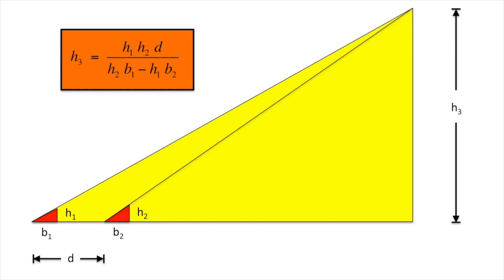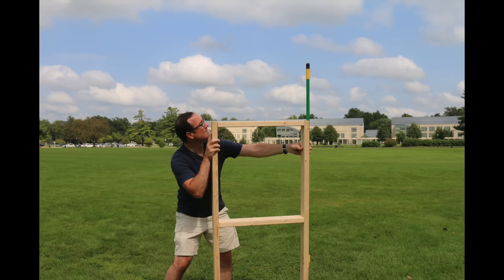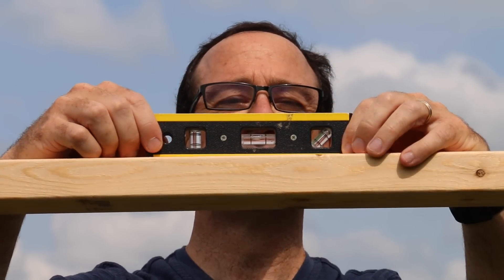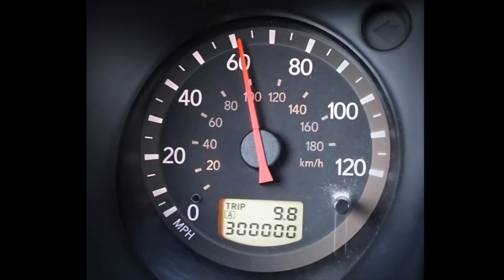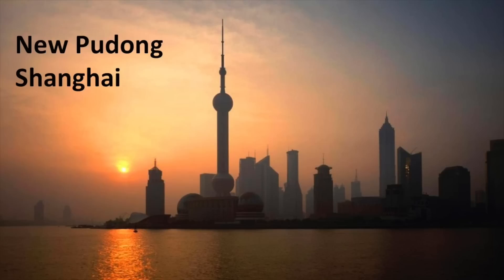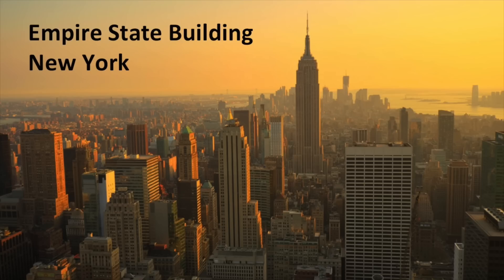After doing some algebra, can you figure this out yourself? Here's the formula to find the height of the building. Your approximation will be more accurate if you can make the distance d between two measurements large and in general be as accurate as possible. I even built a wooden stand and used a level in an attempt to be more precise. You can even use a car's odometer to measure the distance between the two observation points. So try this yourself — find the height of a tall structure near you and tell me what you find in the comments section.